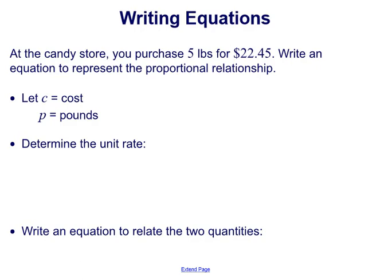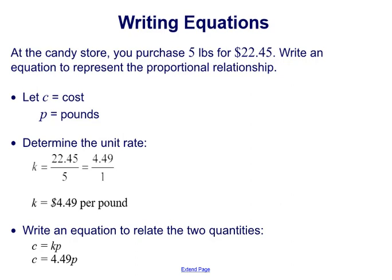We're going to use the two numbers given to find the unit rate and then write an equation to relate the two quantities. Our two numbers: we have 22.45 for the cost and we have 5 pounds. So k equals y over x. Think that x is c and y is p. If we want to find the unit rate, we're going to do the y value over the x value. We're going to do 22.45 over 5, which is 4.49 over 1.